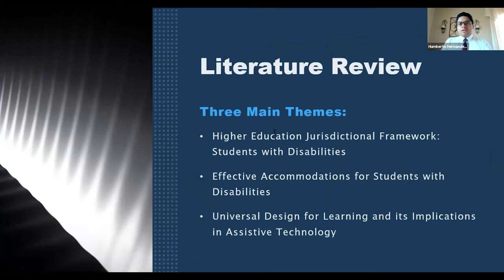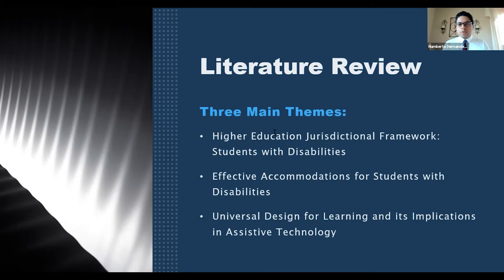The literature review includes three main topics. The first is the higher education jurisdictional framework for students with disabilities, because we need to know which laws protect students with disabilities in the U.S. The second is effective accommodations for students with disabilities, to understand what those laws guarantee. The third is universal design for learning and its implications in assistive technology, because we need to understand what lies beyond effective accommodations.